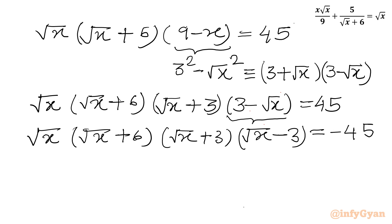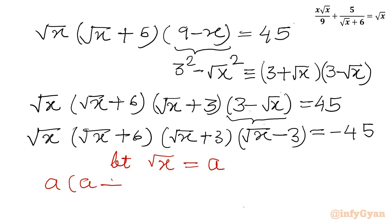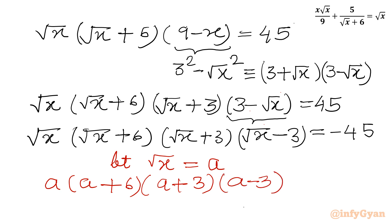Now a straightforward substitution is visible. Let us consider √x equal to a. So this equation will become a times (a plus 6) times (a plus 3) times (a minus 3) equal to negative 45.